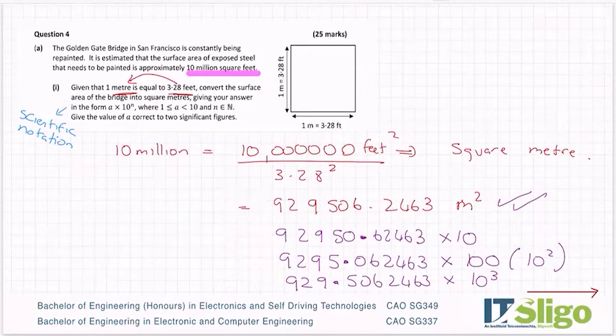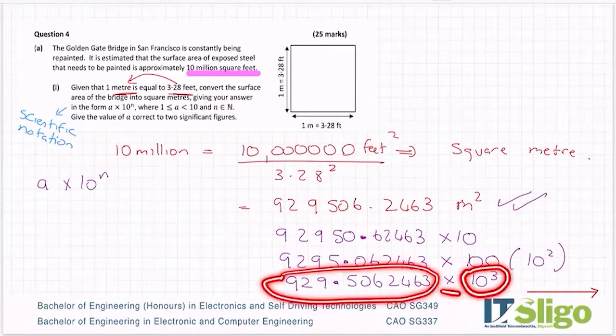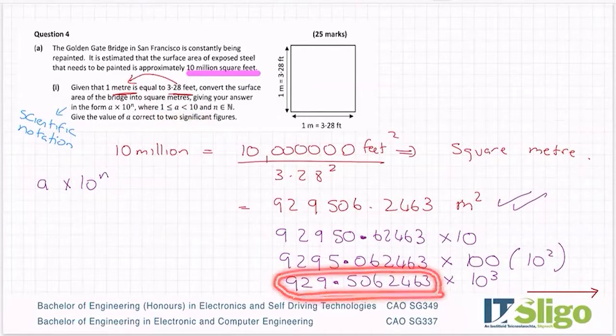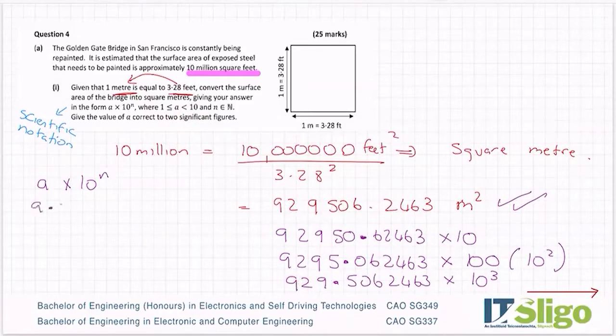So when they tell you to write it in the form a by 10 to the n, this is what they mean. So that is in effect, my a multiplied by 10 to the n. Now they've put a restriction on the a because they don't want to get back like 10 different answers. A has to be between 1 and 10. So I ask you, where do you put your decimal point in that series of digits so that your a ends up being between 1 and 10? And there's only one spot you can put it, which is here so that you have a 9.2.